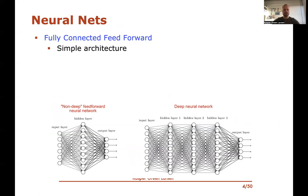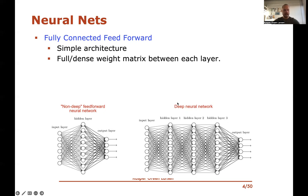The fully connected feed-forward neural nets we've seen so far are simple to describe: every neuron in one layer is connected to every neuron in the next layer. They feed forward through hidden layers depending on the depth of the network, using a full dense weight matrix between each layer to describe the weights on edges between neurons.